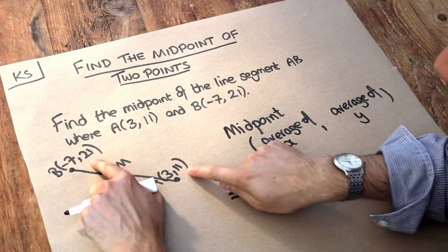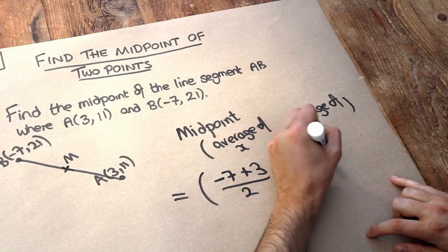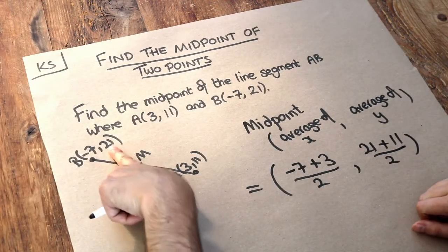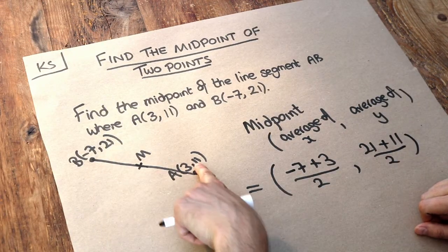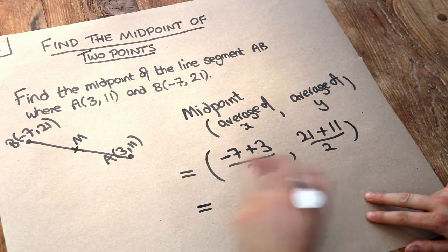So we need to find halfway between 21 and 11. We could just add them and divide by 2 to find halfway between them, or you might just be able to do it using common sense, what number is halfway between 21 and 11. But if we just do it this way where we add the numbers divided by 2...